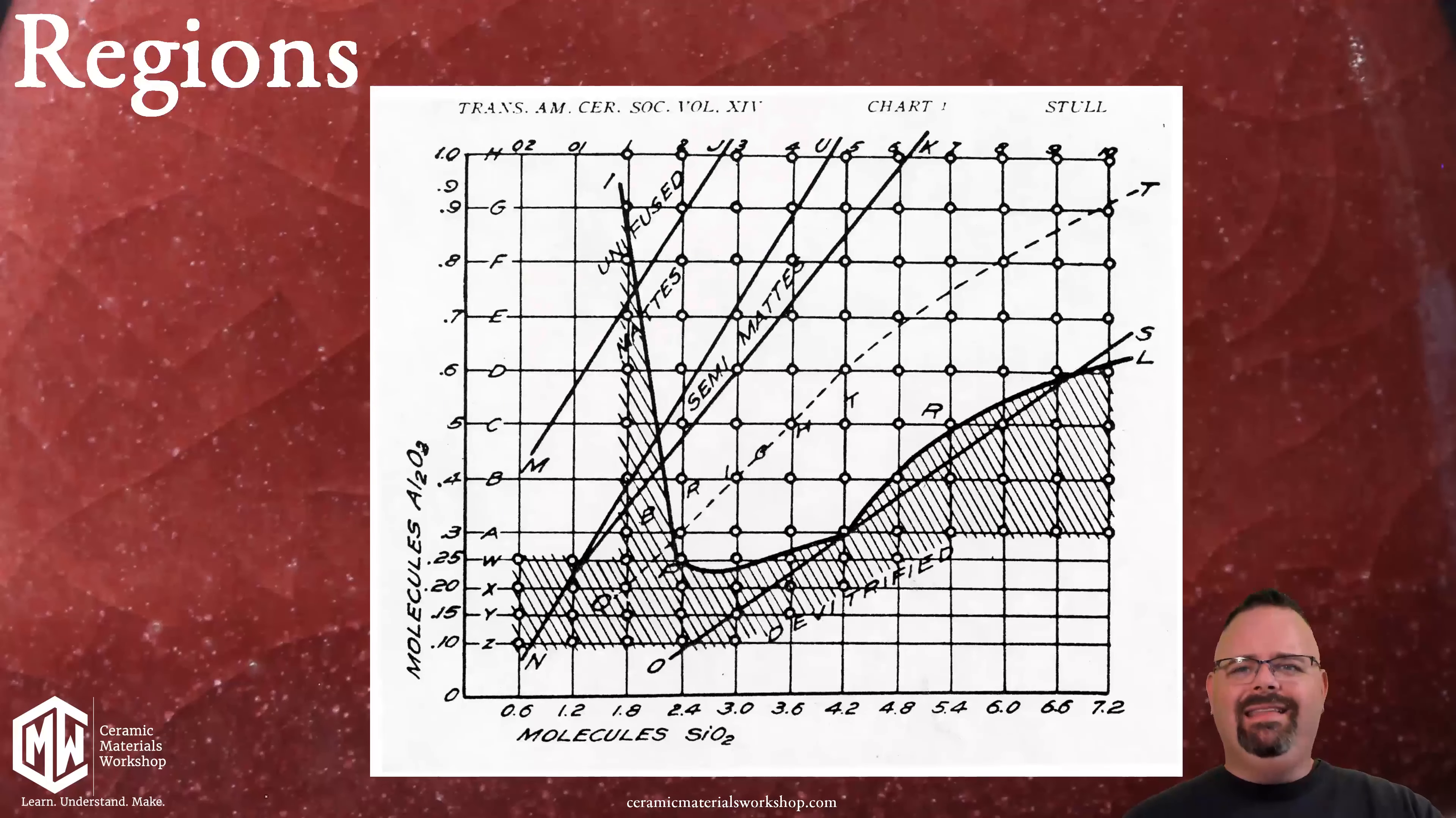So this is the original map that Stull drew in 1912 and we have to look at what it has to offer and what it's showing us. The first thing to understand is that the map is plotting molecules of silica along the bottom axis and molecules of alumina along the vertical axis. Of course those are our glass formers. They're making the glass so they're going to control what the glass becomes. And then we have to look at the internal sections.